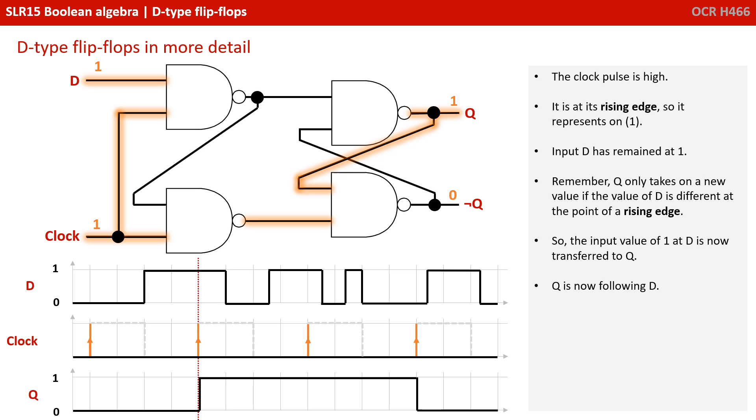Now the clock pulse is high and we're at its rising edge, so it represents as a one. The input D has remained at one. Remember, Q will take on the value of D if it's different at the point of a rising edge, so the input value of one at D is now transferred to Q. Q is now said to be following D.